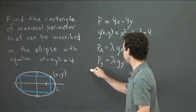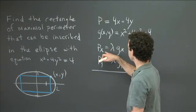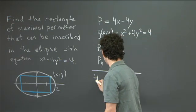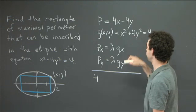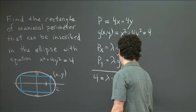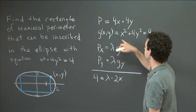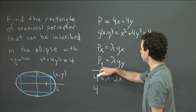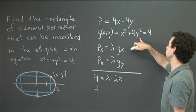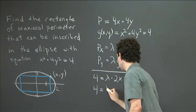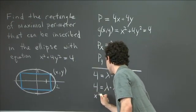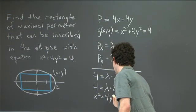In our case, px is the partial derivative of 4x plus 4y with respect to x, which is just 4. And gx is the partial derivative of x squared plus 4y squared with respect to x, which equals 2x. So 4 equals lambda times 2x. From the y partial derivatives, py equals 4, and gy is the partial derivative of x squared plus 4y squared with respect to y, which is 8y. So 4 equals lambda times 8y. And we also have the constraint x squared plus 4y squared equals 4.